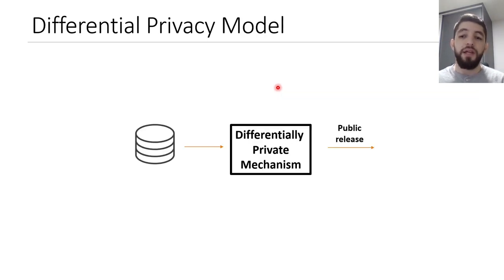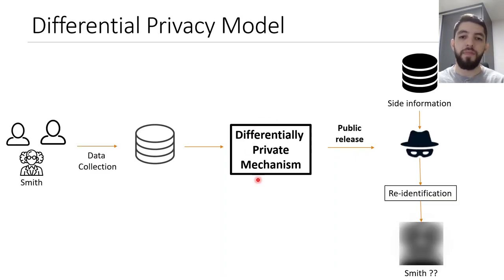Differential privacy anonymizes the answer for any query issued to the database for public use and we call that process a differentially private mechanism. It is designed such that an attacker cannot re-identify our friend Smith that has its data collected in the data collection step to compose the database.